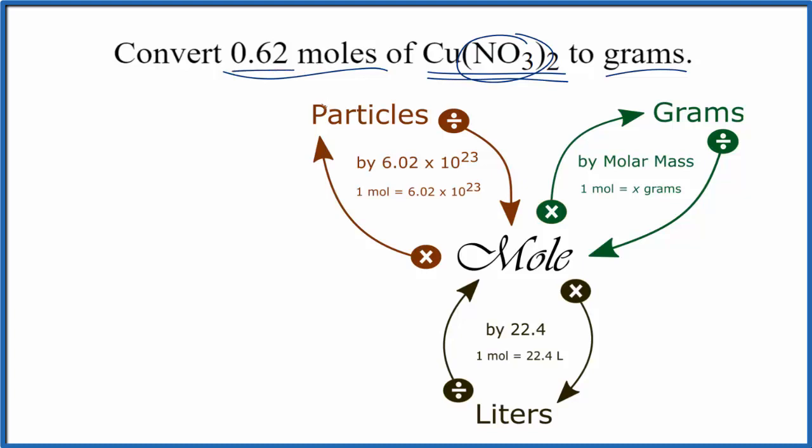This 0.62 number is just something I made up for the problem. So we have 0.62 moles of copper 2 nitrate.